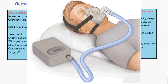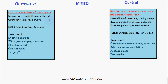With CPAP, a mask is placed over the nose while you're sleeping, and this mask is attached to a small pump that supplies a continuous amount of pressurized air to hold open the upper airway. This is used for the treatment of both obstructive sleep apnea and central sleep apnea.